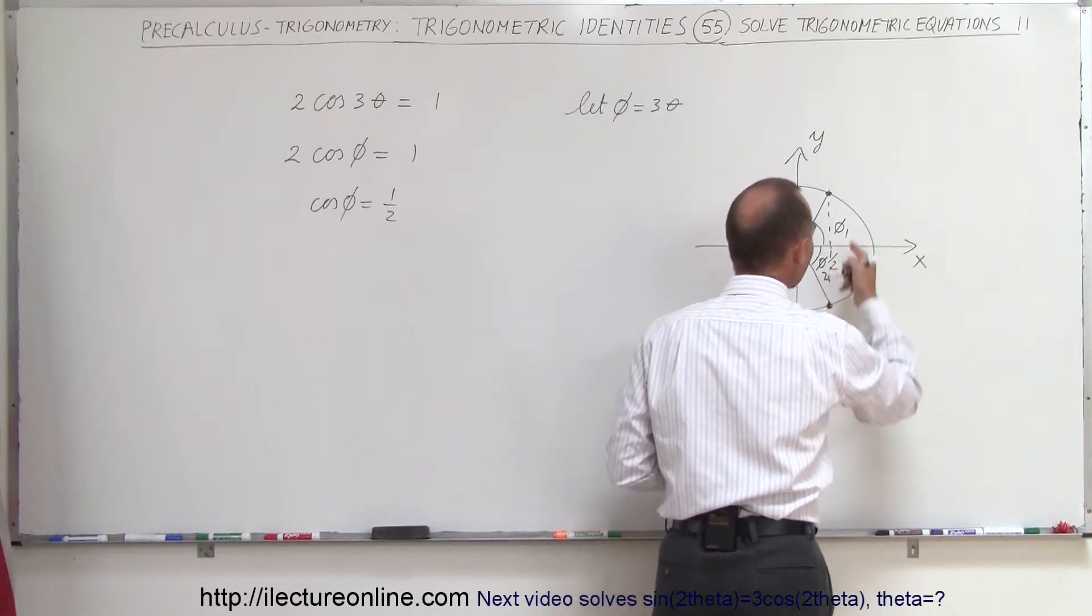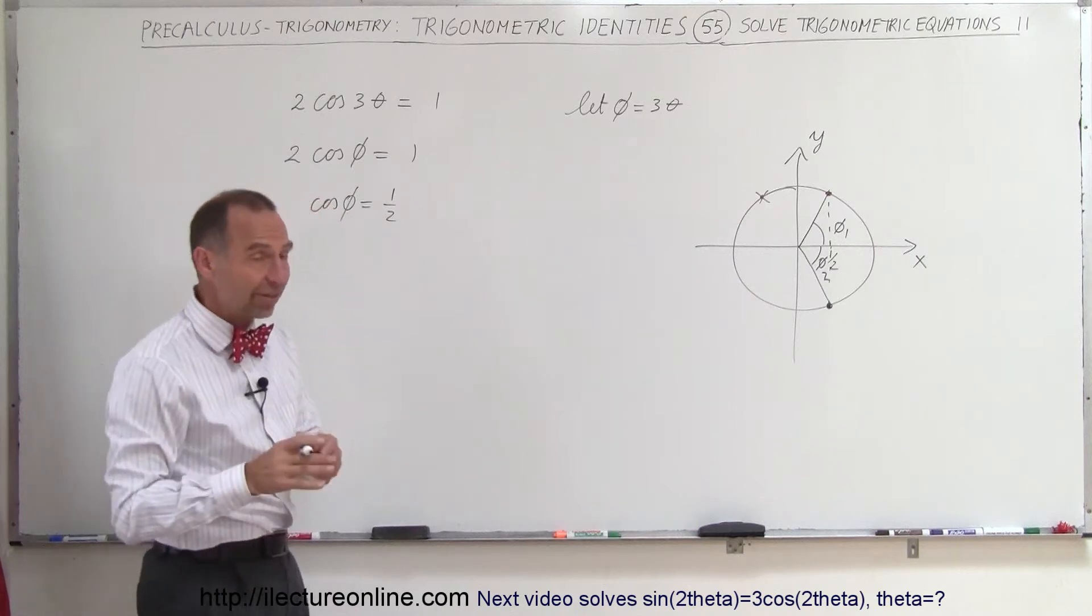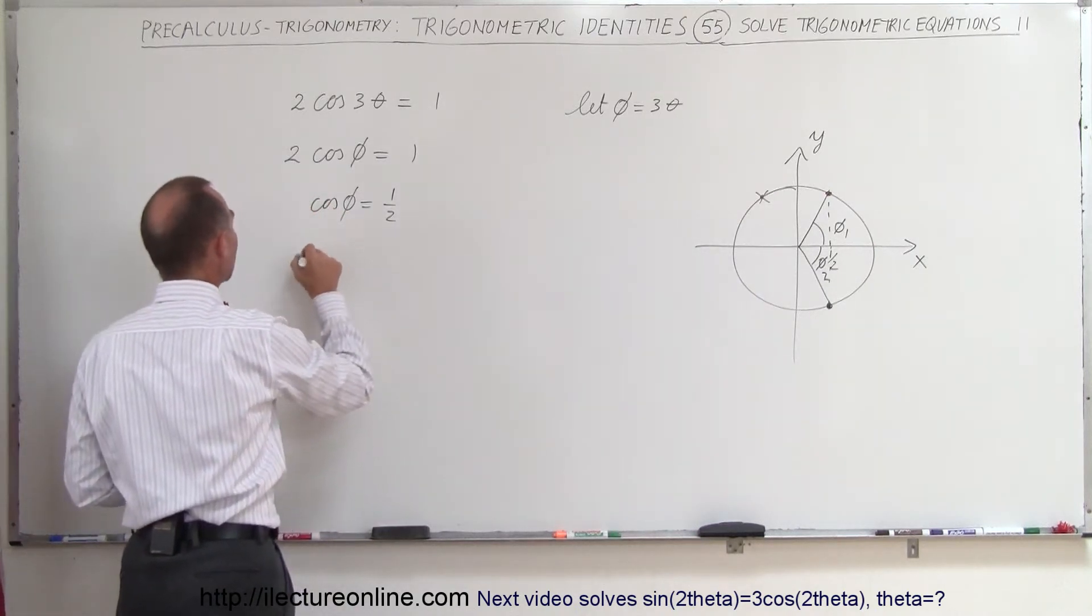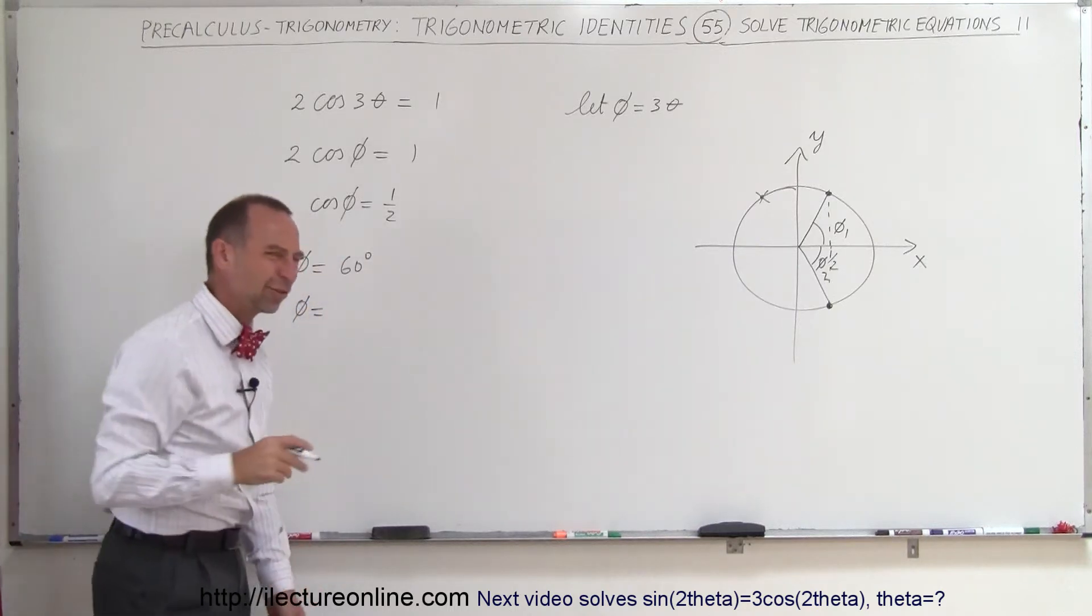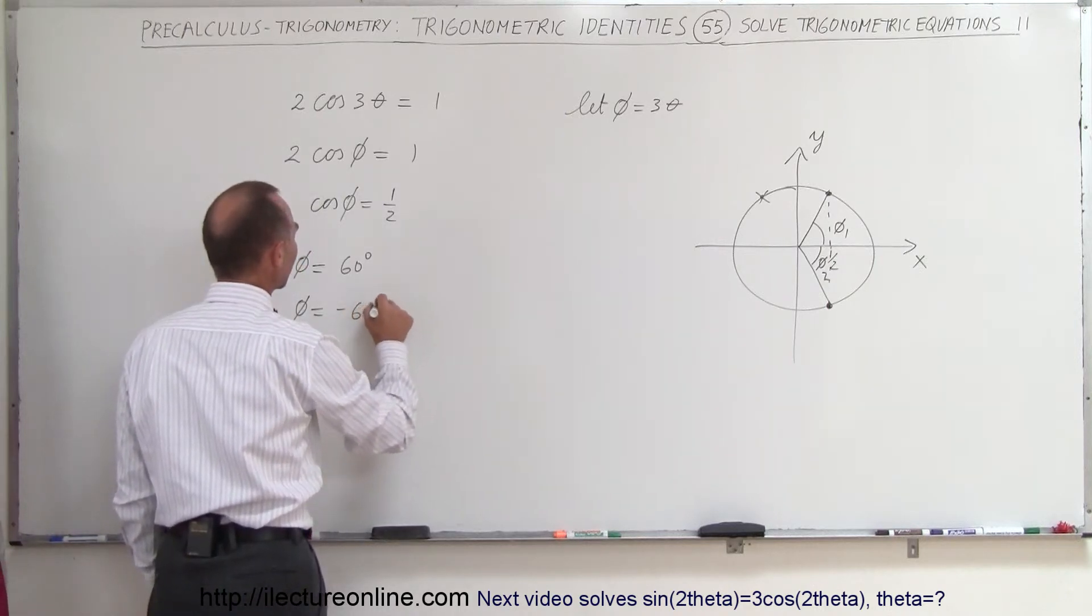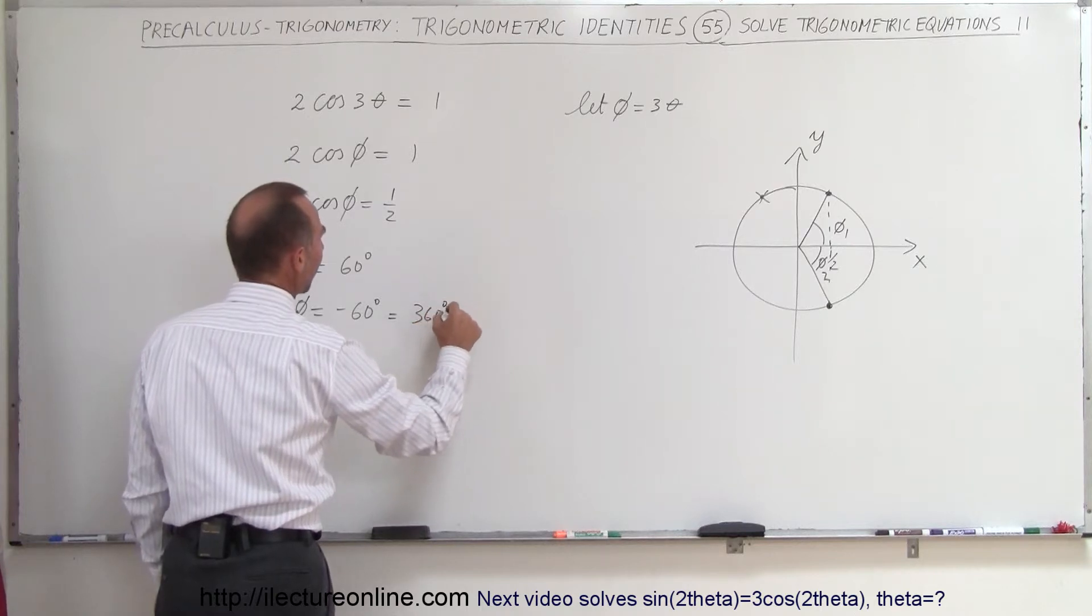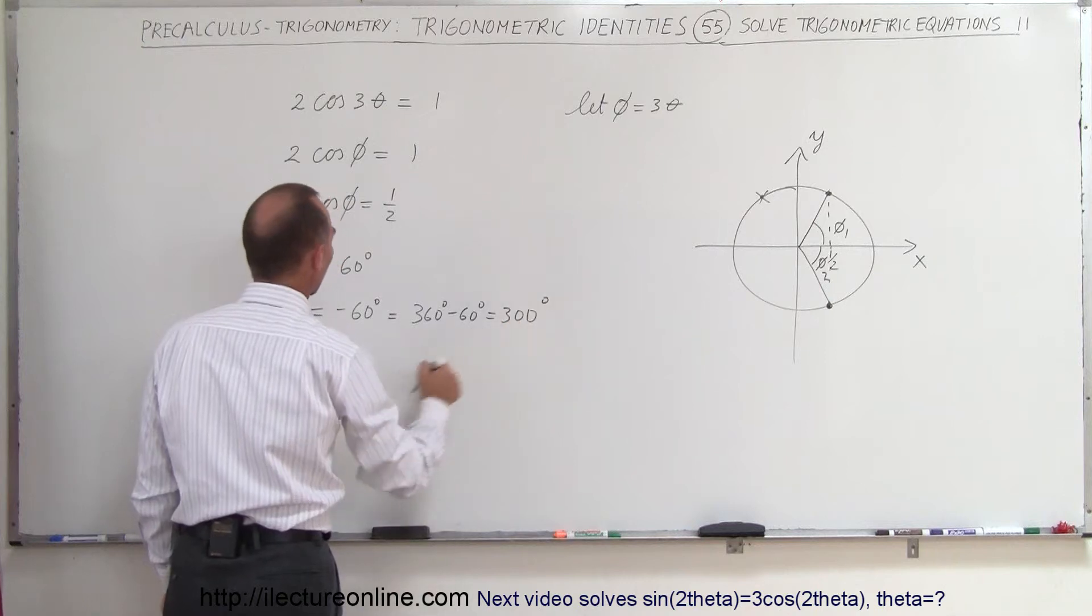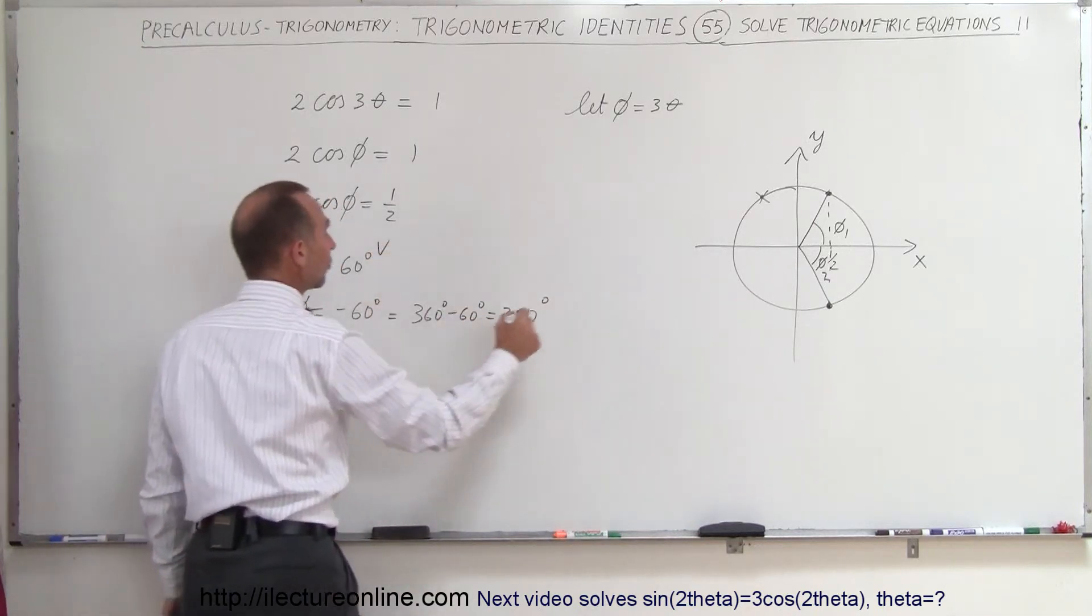Of course, that would be a negative angle. And if the angle is 60 degrees, if phi 1 is 60 degrees, the cosine of 60 degrees equals 1 half. So, that means phi can equal 60 degrees or phi can equal minus 60 degrees. Of course, that's equal to 360 minus 60 degrees or 300 degrees. So, you can either use minus 60 degrees or 300 degrees as the solutions.